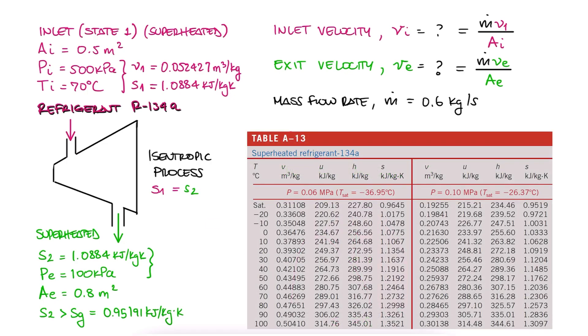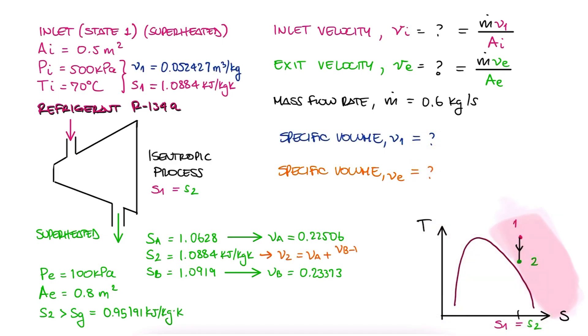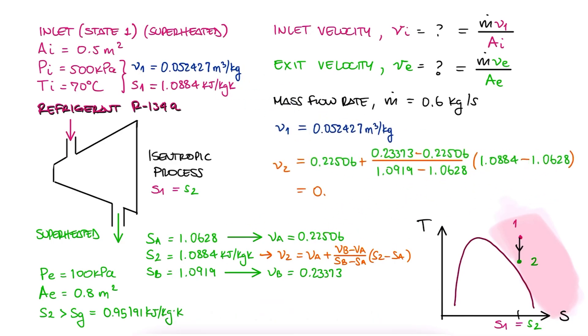We go to the 100 kPa superheated subtable and see that s2 is between 1.0628 and 1.0919. These two entropy values correspond to specific volumes of 0.22506 and 0.23373 respectively. It means that we can find the specific volume from our entropy value by interpolating. We do a quick interpolation between these values and find that V2 is 0.232687 cubic meters per kilogram.